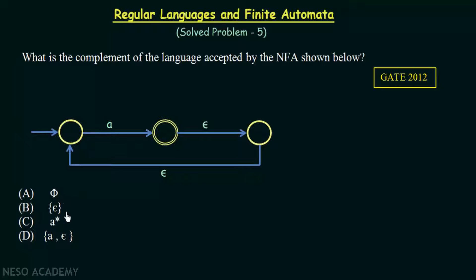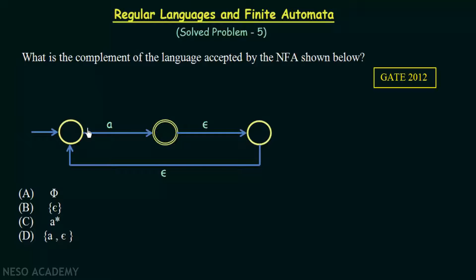The options we have are: phi, epsilon, A-star (closure of A), and a set containing A and epsilon. Our task is to find the complement of this language — the opposite of whatever is accepted by this NFA. First we have to find out what this NFA accepts, and after finding that we can find the complement.